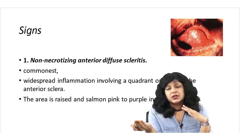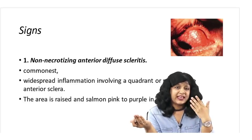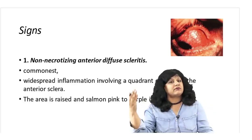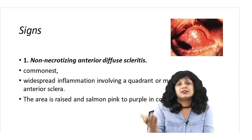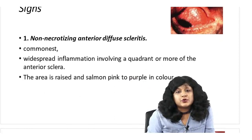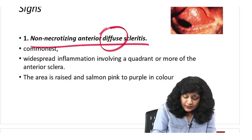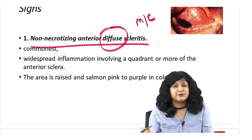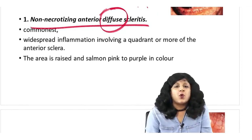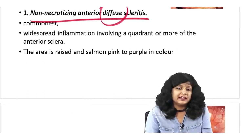If you have that deep boring pain, your diagnosis is going more and more in favor of scleritis. Even if you look at the eye, the scleritis eye will be giving a more severe look in comparison to episcleritis. The non-necrotizing anterior diffuse is the most common kind of scleritis — showing widespread inflammation, a quadrant or more, and the area is raised, salmon pink or purple in color. It will look like an acute red eye.